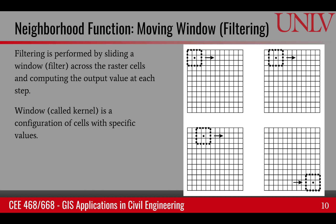Another example of a neighborhood function is filtering, or the moving window. Filtering is performed where we take a small window and slide it over our image. As we are sliding it, we use the pixels that fall inside the window to compute some new value for the center pixel, then shift it to the next. This way we move it across all pixels of the image. This small window is also called the kernel, and it has a specific configuration and specific values that define it for the filtering process.